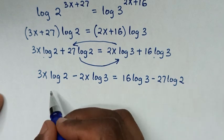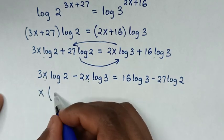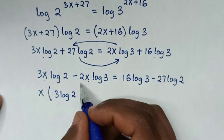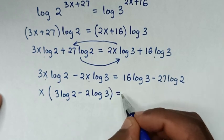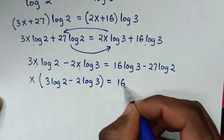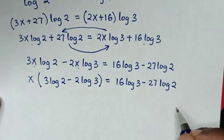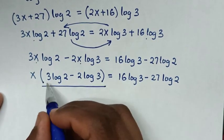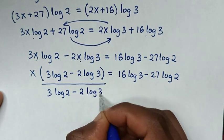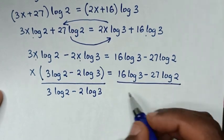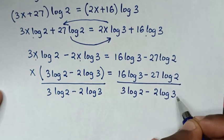Then in the next step, on the left side x is common, so we take x out of the bracket. It will be x times (3 log of 2 minus 2 log of 3) is equal to 16 log of 3 minus 27 log of 2. Then we divide both sides by (3 log of 2 minus 2 log of 3).